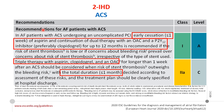For acute coronary syndrome: in AF patients with ACS undergoing uncomplicated PCI, early cessation of aspirin after one week and continuation of oral anticoagulant with a P2Y12 inhibitor — mainly clopidogrel — for up to one year is recommended if bleeding risk is high and ischemic risk is low. If ischemic risk is high and bleeding risk is low, triple therapy for one month including aspirin, clopidogrel, and oral anticoagulant can be given, then aspirin is dropped after one month.